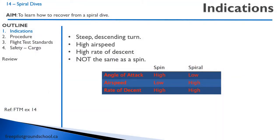Let's discuss the indications. A spiral dive is a steep descending turn. It has high airspeed, high rate of descent, and importantly, it's not the same as a spin. Let's take a look at some of the differences.